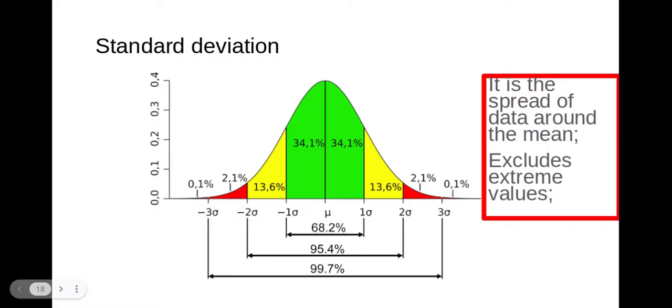Now in previous videos, and I'll post a link in the description below, we've looked at what standard deviation is. So standard deviation is the spread of data around the mean and it excludes the extreme values so that's the green data here. Anything in a red box is taken directly from the mark scheme, we really need to know what that is.